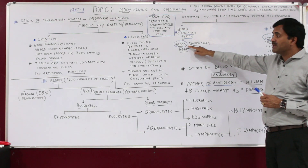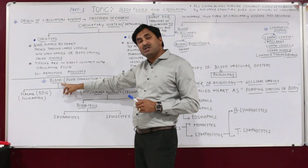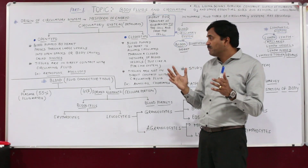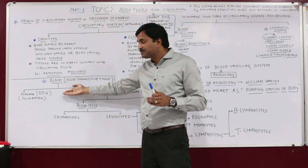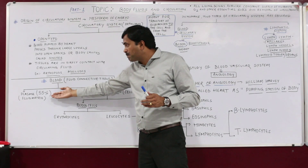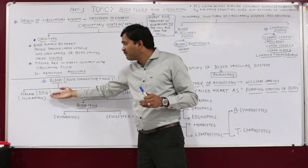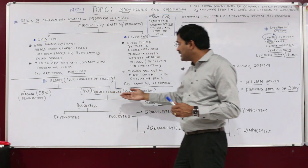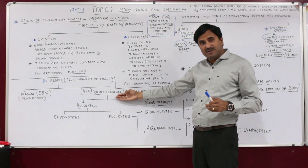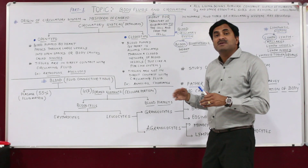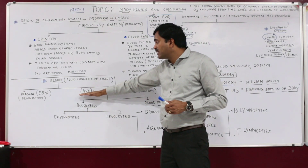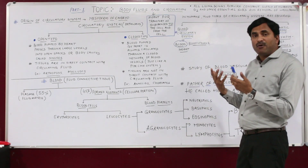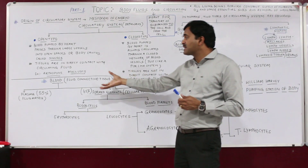We will now discuss the blood circulatory system. The fluid here is blood. Blood is a fluid connective tissue, consisting of two major components. One is plasma, the fluid matrix, which is straw-colored — pale yellow — and forms 55% of the blood. The other component is the formed elements, which form the cellular portion of the blood and make up 45% of the blood.